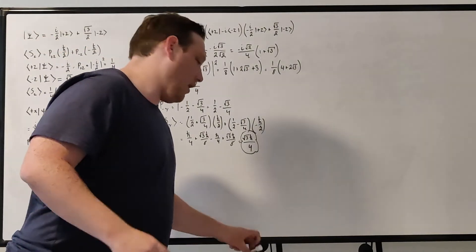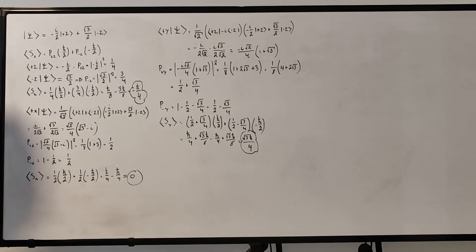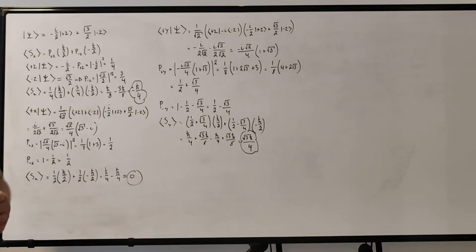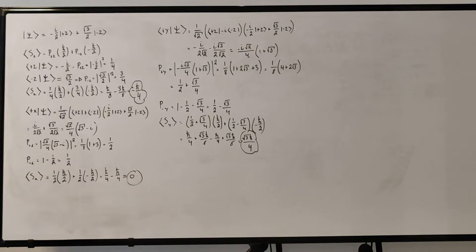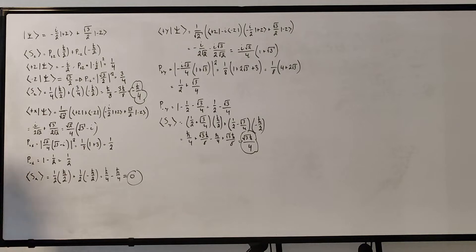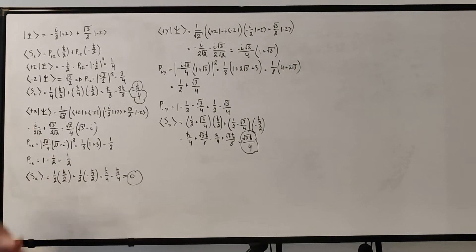Hello everyone, welcome to problem 1.11 of John Townsend's A Modern Approach to Quantum Mechanics. This problem is pretty similar to problem 1.10. So if you've done and seen problem 1.10, you're going to be pretty familiar with this problem. It's the same problem, just a different state, and it asks us to compare the differences between our answers for this and the answers for problem 1.10.